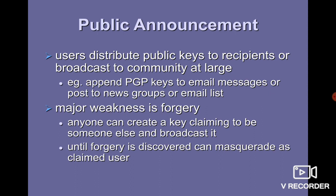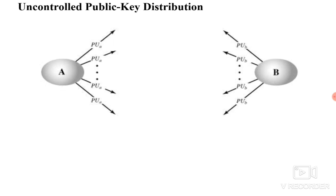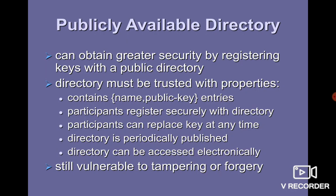The first method is public announcement. As the name implies, the sender or owner of the public key distributes the public key to all the recipients, or broadcasts it to the community. For example, we may attach PGP keys to email messages, post our public keys in a newsgroup, or post them in an email list. The major drawback of this method is forgery — anyone can create a false key and claim it belongs to someone else. This is uncontrolled public key distribution, meaning there is no limitation on the number of public keys owned by a person.